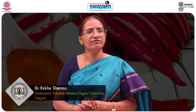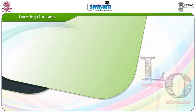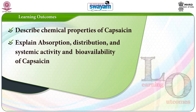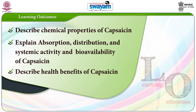In this module, we shall study Capsaicin. The objectives of this module are: after studying this module, students shall be able to describe chemical properties of Capsaicin, explain absorption, distribution, systemic activity and bioavailability of Capsaicin, and describe health benefits of Capsaicin.